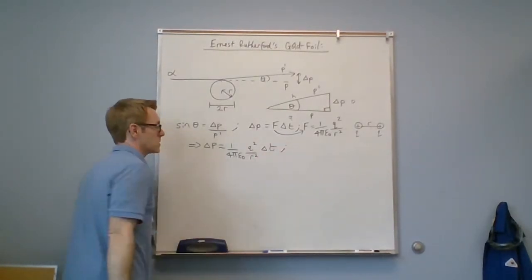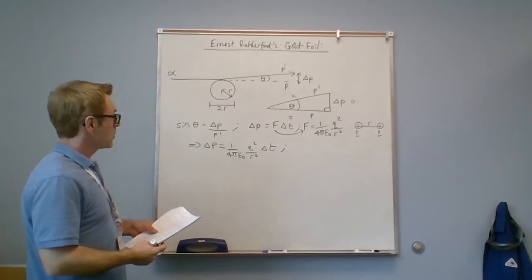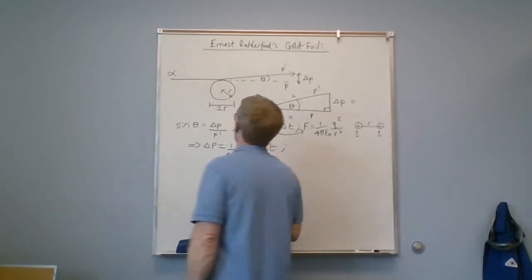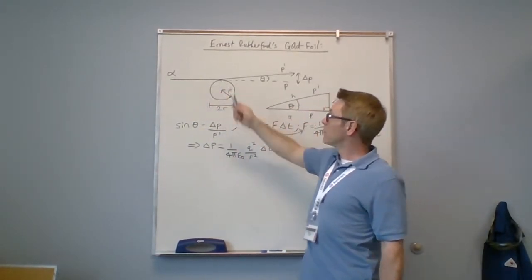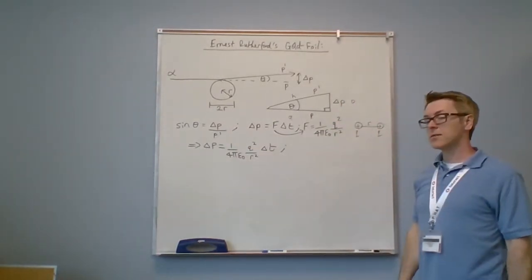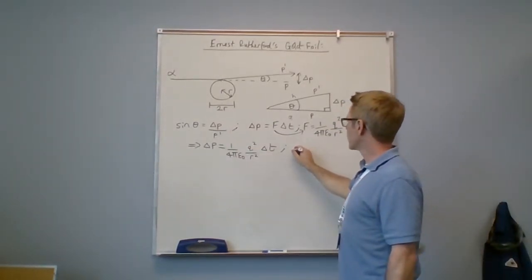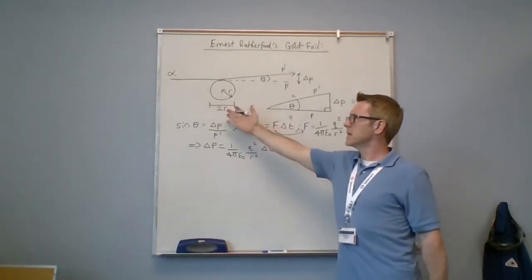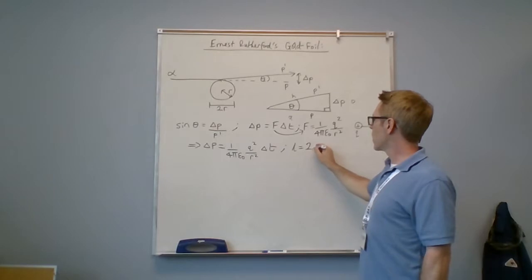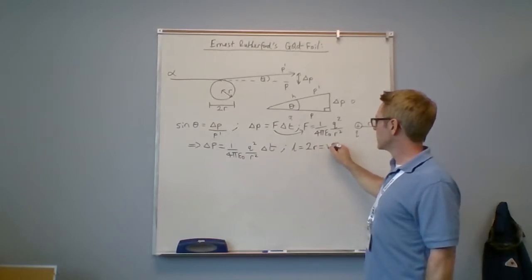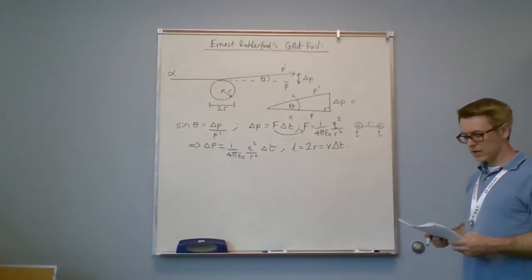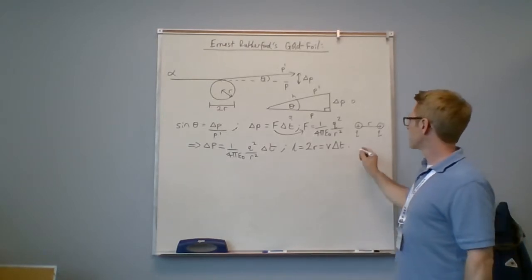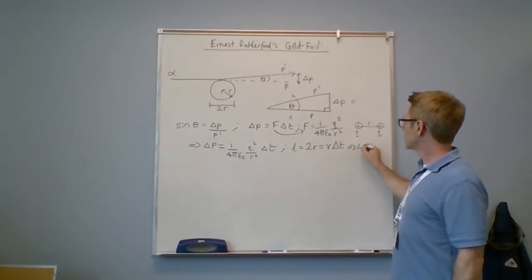We also want to say that the alpha particle, as it crosses the length of the atom, it's going to cross a distance of 2r. We know that length, which in this case is the diameter of the atom, is 2r, and that's the velocity of travel v, and the time of travel delta T. So 2r is v delta T. We know that delta T is 2r over v.